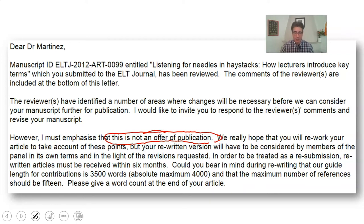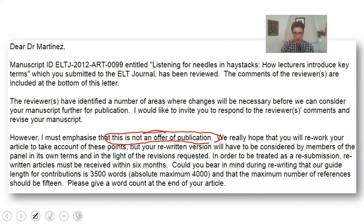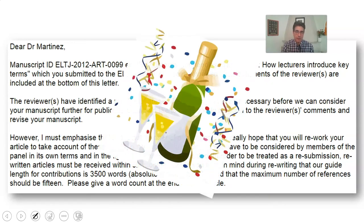Unfortunately, one of the most common reasons an article never makes it through to publication is that authors simply don't revise and resubmit. There are so many 'orphans of science' out there. The editor says: 'We really hope that you will rework your article to take account of these points, but your rewritten version will have to be considered by members of the panel. Rewritten articles must be received within six months.' If they haven't rejected the article and they're saying take these points into account and resubmit — that's good news. I revised and resubmitted, and I did get published.